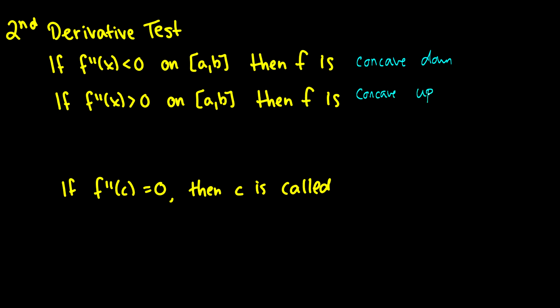Concave down and concave up refer to a specific direction of curves. Something that's concave down is going to look like one side of this — a curve that kind of looks like a frowny face. And concave up is going to look like a happy face with its curve, so it'll curve in one of those directions.